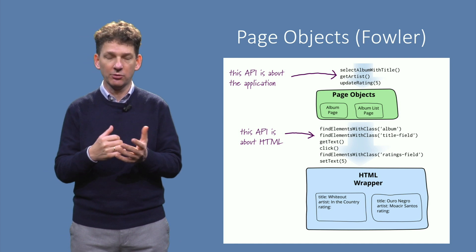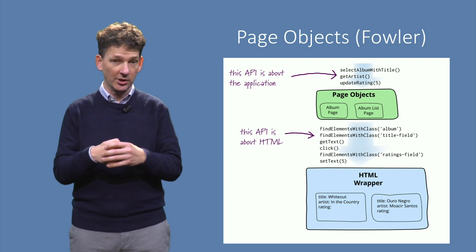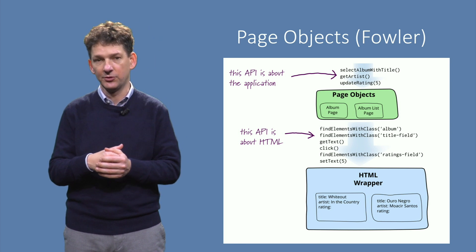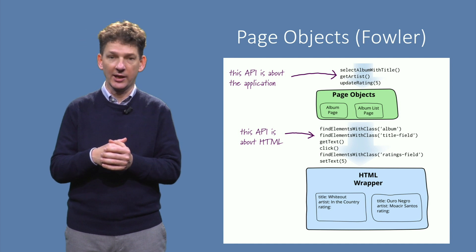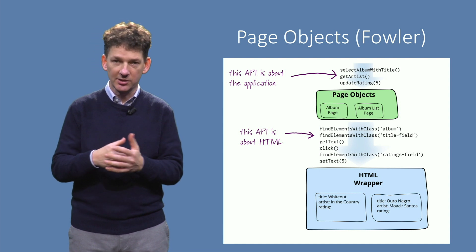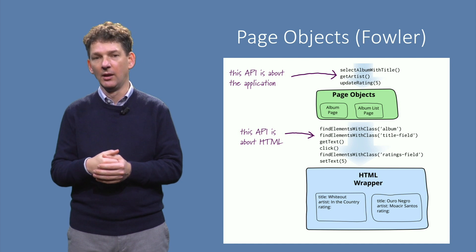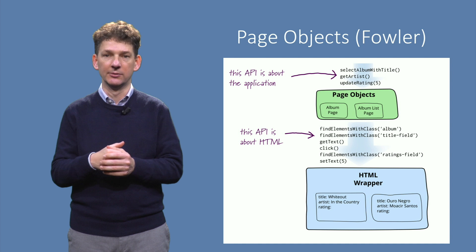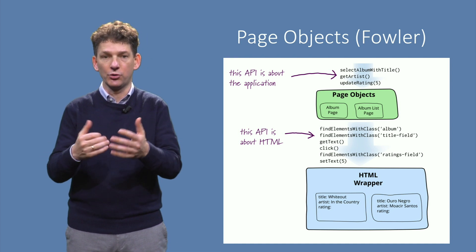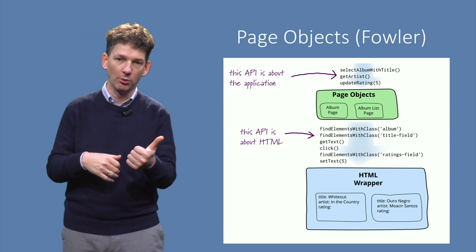Here is an illustration of page objects created by Martin Fowler. In the middle you can see the HTML-based API offered by a tool such as WebDriver. With such an API, it is possible to find HTML elements such as albums and title fields, and it supports clicking elements such as the text of a title field to select an album. Directly using the HTML-based API in test cases will lead to tests expressed in terms of HTML, which may be hard to understand. The recommendation is therefore to add an abstraction layer of page objects that offer a natural API — in this case to select an album or to update a rating — leading to readable tests expressed in terms of the application domain: albums, ratings, and artists.